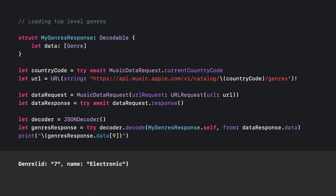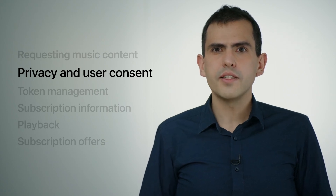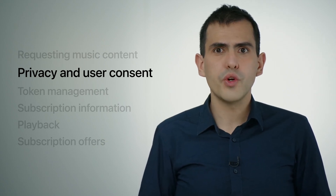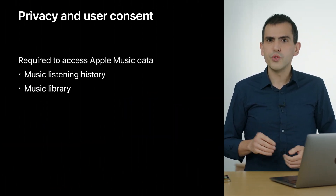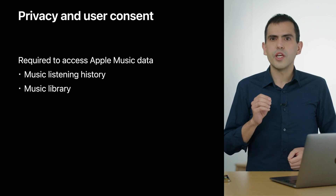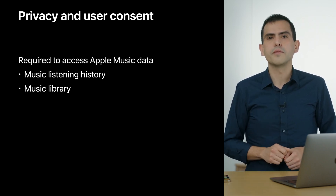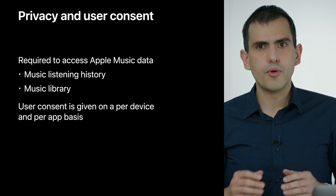So that's how you would load content from any arbitrary URL for Apple Music API. Now that we know how to load music content, let's discuss some important preliminary steps for integrating your apps with Apple Music, starting with privacy. We want users to remain in control over which apps have access to their data. So before you can request any data from Apple Music API — which can include the user's listening history or their music library — you need to get the user's informed consent. Asking for this user consent needs to be done on a per device and per app basis.